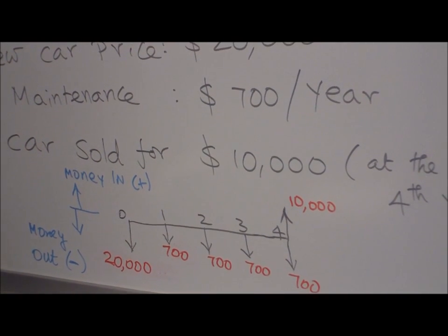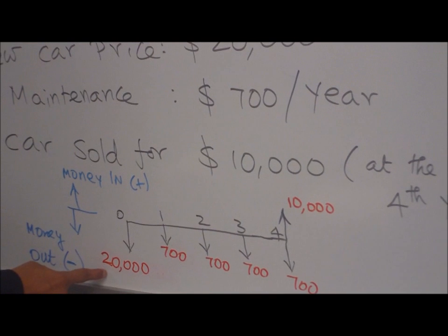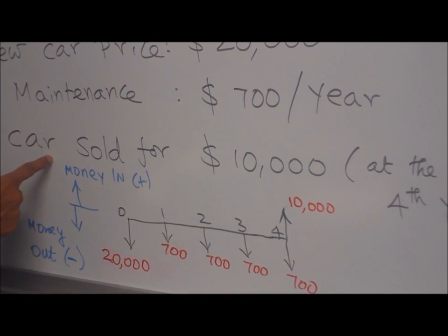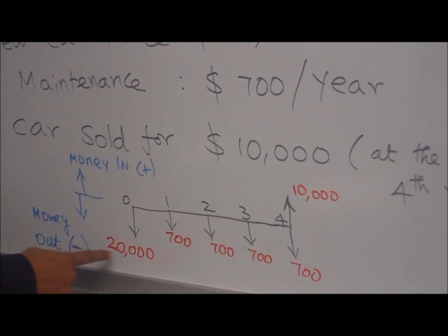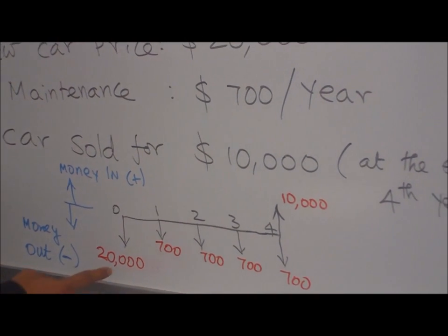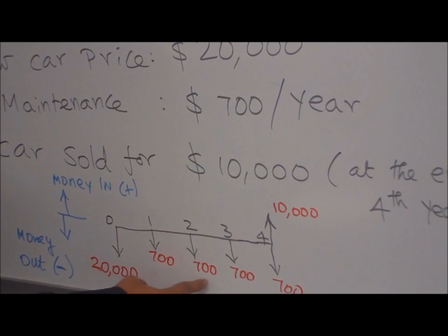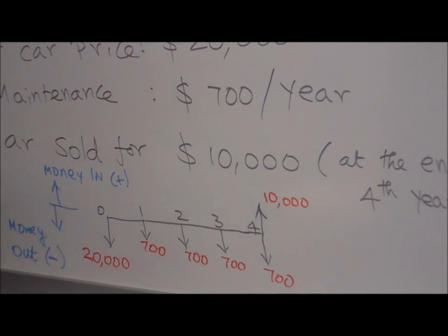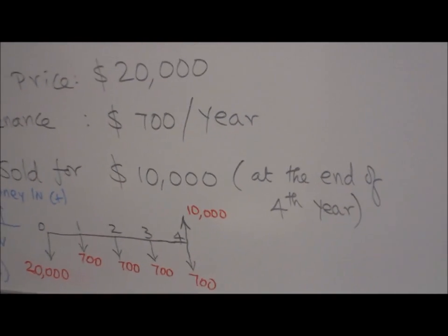If you look at the Cash Flow, first $20,000 goes out. So money out is negative. Money in is positive. Positive up, negative down. So $20,000 show down arrow. $700 each year shown by down arrow. $10,000 up arrow for money in. So this is a simple example of Cash Flow.